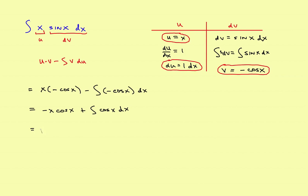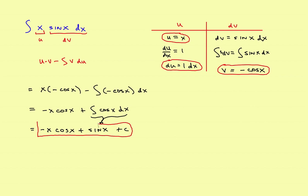That gives you negative x times the cosine of x. The integral of the cosine of x is just the sine of x. Don't forget to attach a plus c. So the final answer is negative x cosine x plus sine x plus c. Integration by parts one time, and you came out with the correct answer. This is true if you just have x to the first power — it just takes a single step.